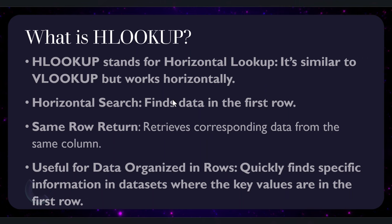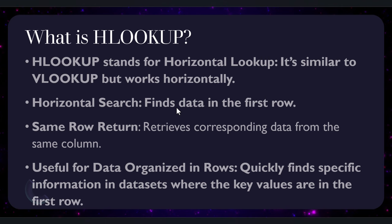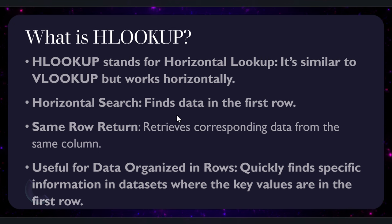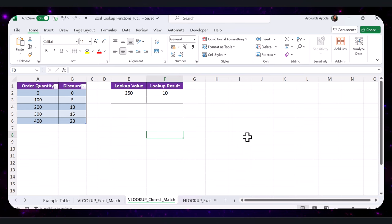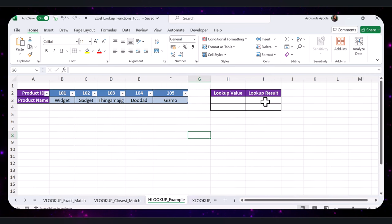Now let's switch gears and talk about HLOOKUP. HLOOKUP stands for Horizontal Lookup — it's similar to VLOOKUP but it searches for values horizontally across rows. To demonstrate, open the HLOOKUP Example sheet in the practice file and enter the formula in the lookup result cell.